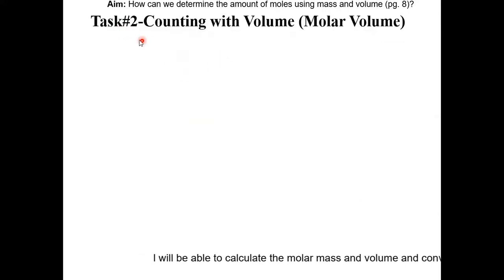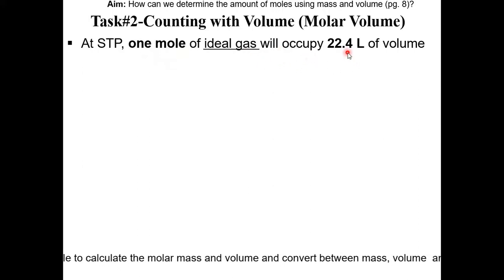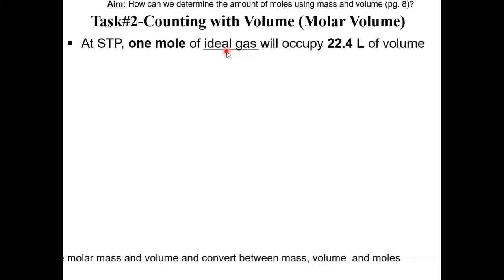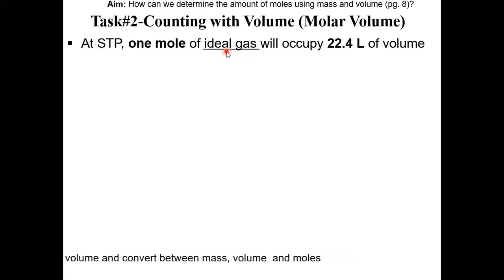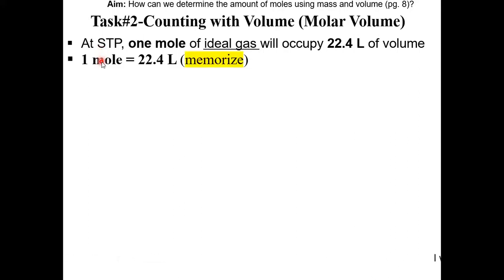In task 2, we'll be counting with volume. At STP, one mole of ideal gas will occupy 22.4 liters of volume. Ideal gas will behave ideally under ideal conditions — we will discuss this further in the gas unit. STP is standard temperature and pressure, found on table A. You have to memorize this conversion factor: one mole is 22.4 liters.